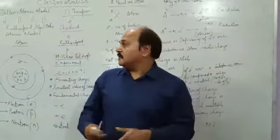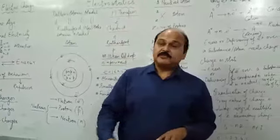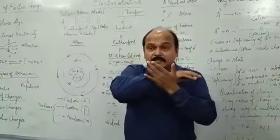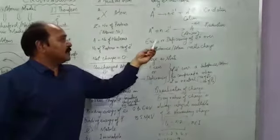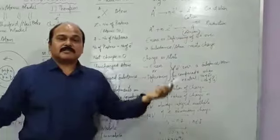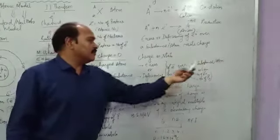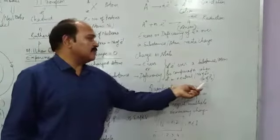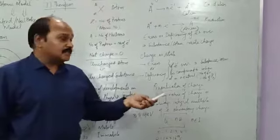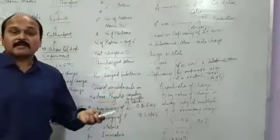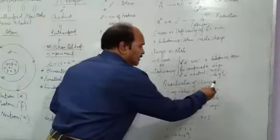So children, our concept of charge, which was initially intermingled with energy, is now completely reversed — there is a U-turn in the explanation of charge. Initially we said charge is nothing but a form of energy. Now we understand: charge is a state of excess or deficiency of electrons over a substance or an atom, as compared to when it is neutral. Neutral means the number of electrons is the same as the number of protons in the atom.